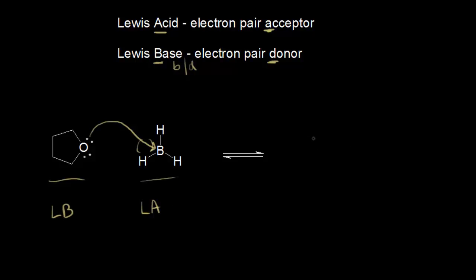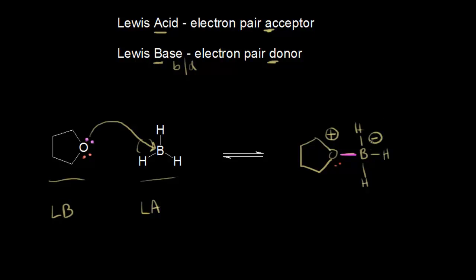Let's draw the product of this Lewis acid-base reaction. The oxygen is now bonded to the boron, and boron is still bonded to three hydrogens. The electrons in magenta formed the bond between oxygen and boron. The electrons in red are still on the oxygen. The oxygen therefore has a plus one formal charge, and boron gets a negative one formal charge.